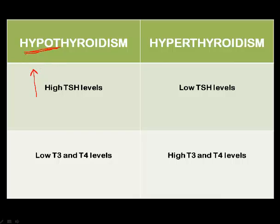And since your gland is under-functioning, the hormones produced by the gland go low. On the contrary, when you are hyper, your gland is functioning more than normal, you don't need stimulation, so TSH, or thyroid-stimulating hormone, will be low. And naturally, your gland is hyper and it produces more of the hormones T3 and T4. So, this is the relation everybody has to understand.